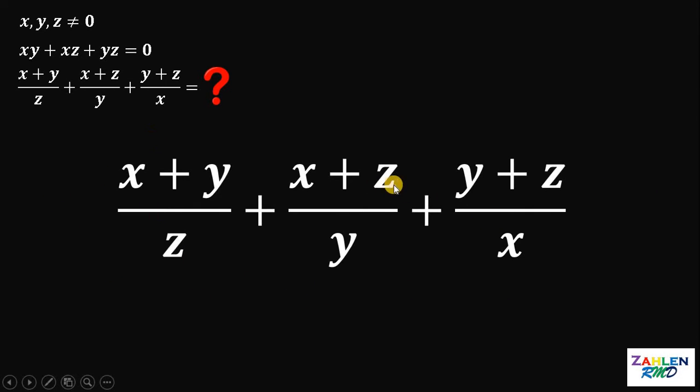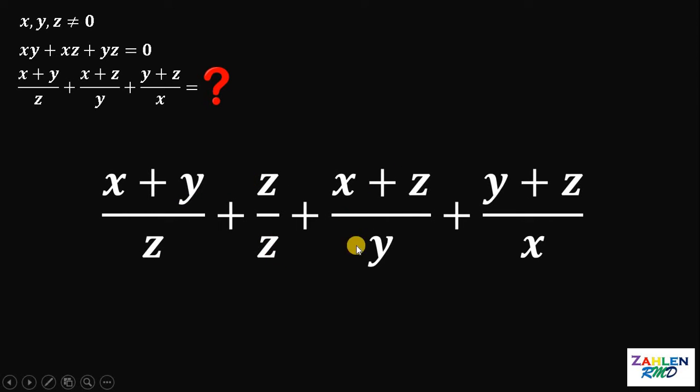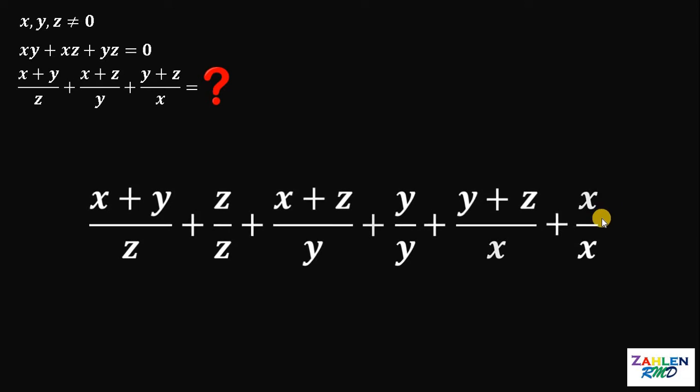First thing to notice is their numerator. So we have x plus y, x plus z, and y plus z. Now, what if we make the numerator of these three fractions equal? So to do that, on the first term, let's add z over z. Now on the second term, let's add y over y. And on the last term, let's add x over x.